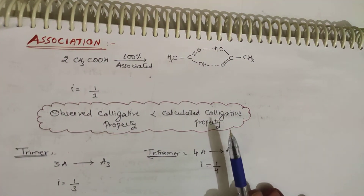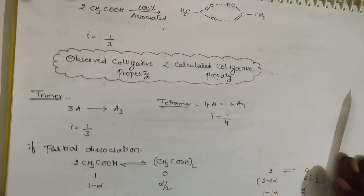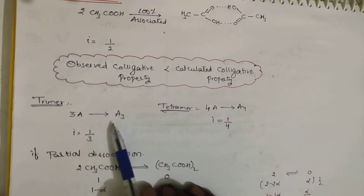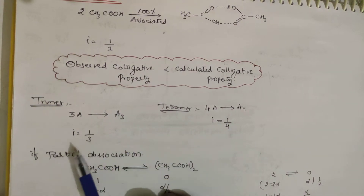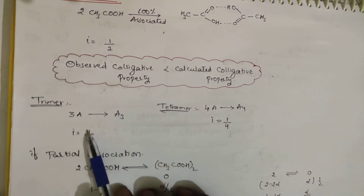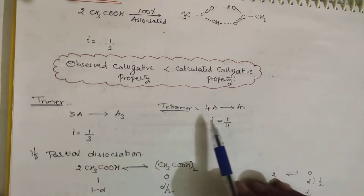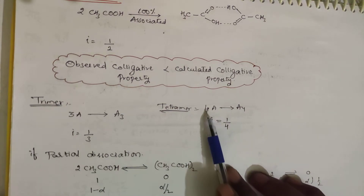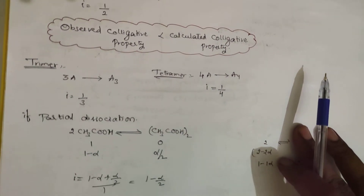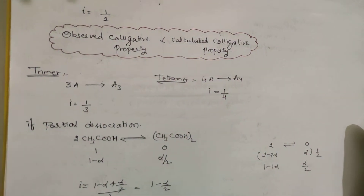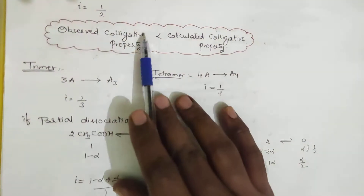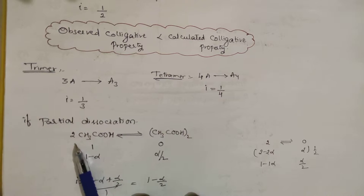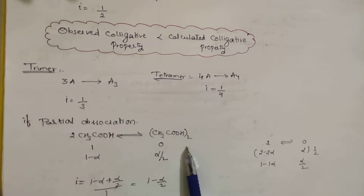For 3A → A₃: initially 3 particles combine into 1, so i = 1/3. For 4A → A₄: i = 1/4. In association, the observed colligative property is always less than the calculated colligative property.